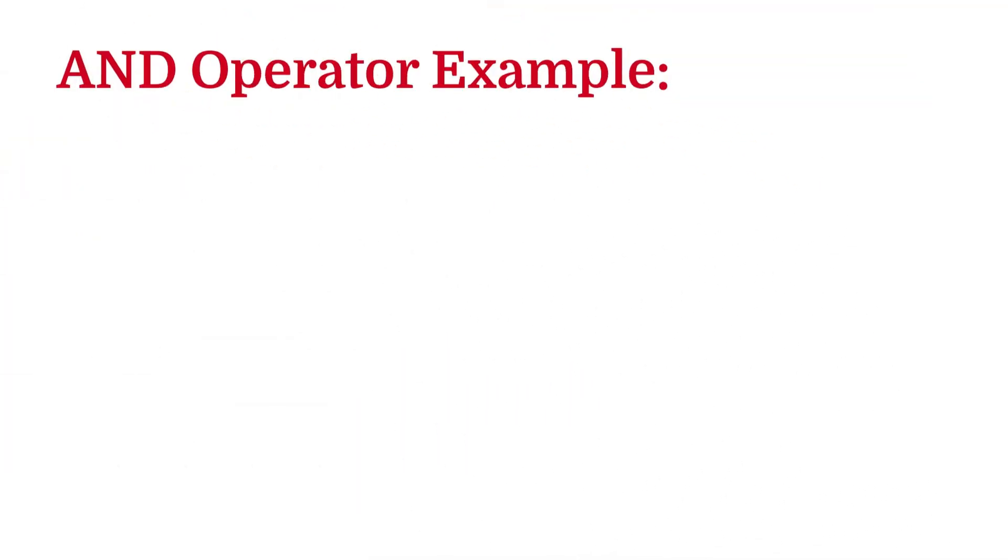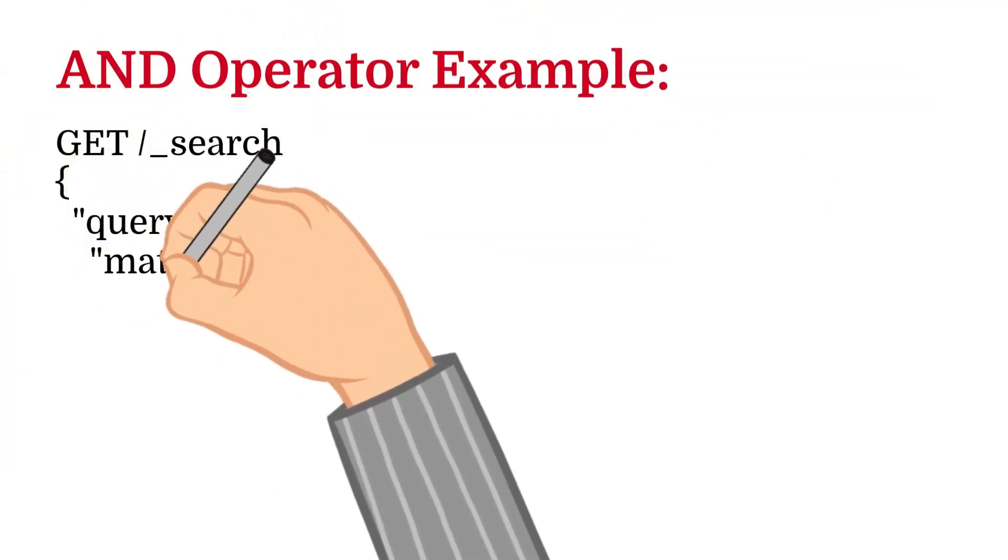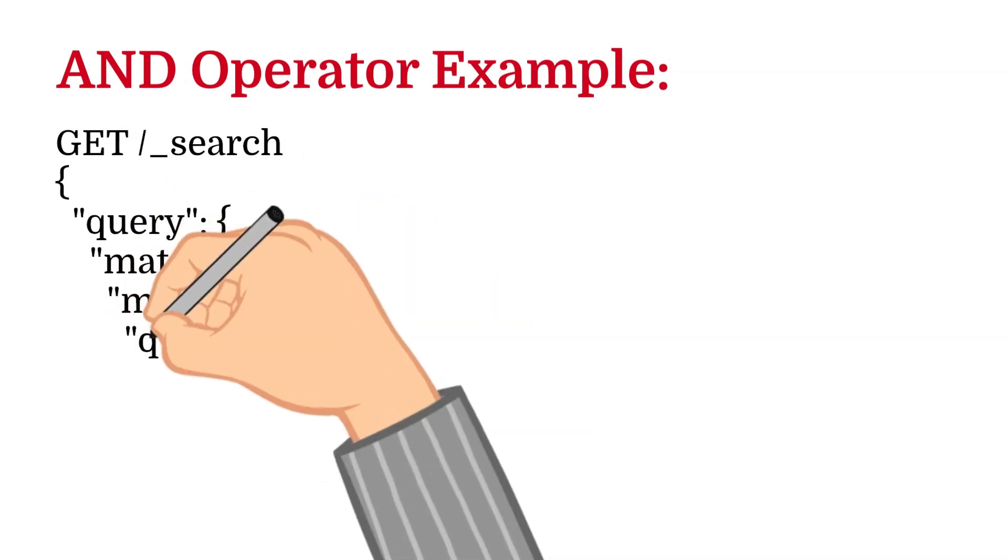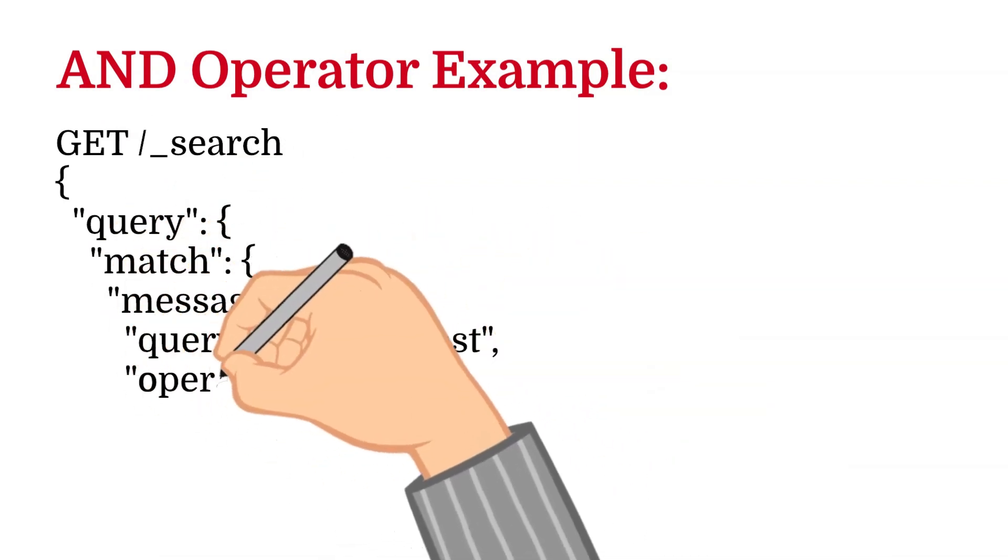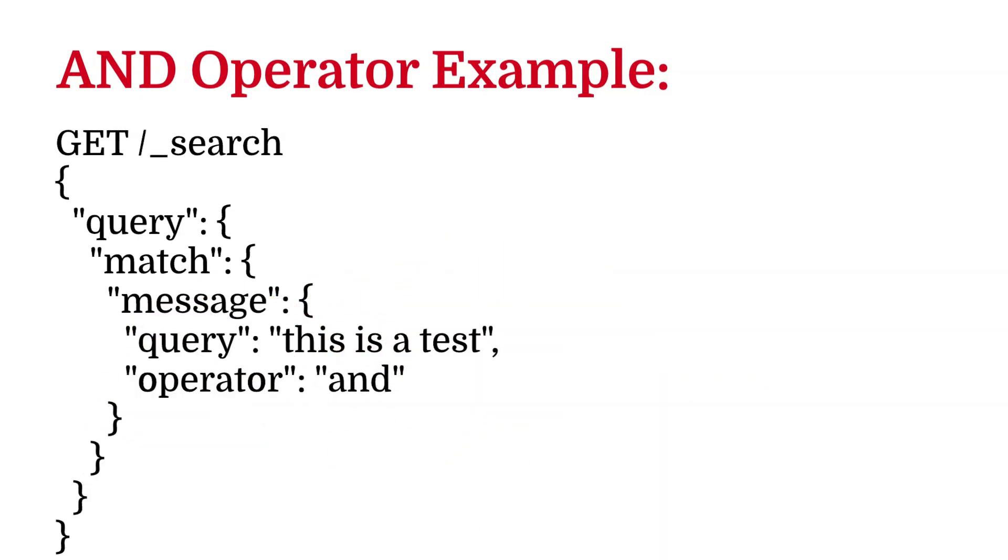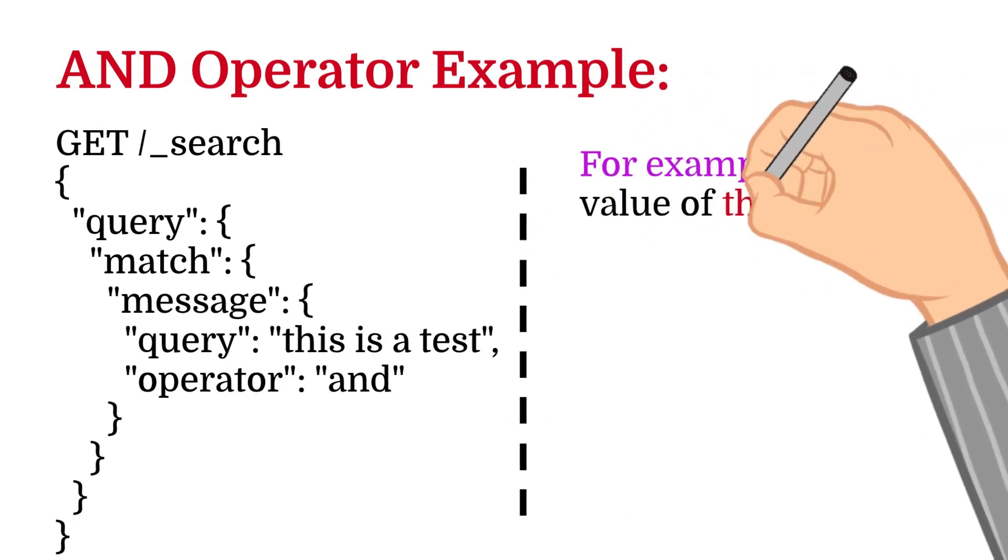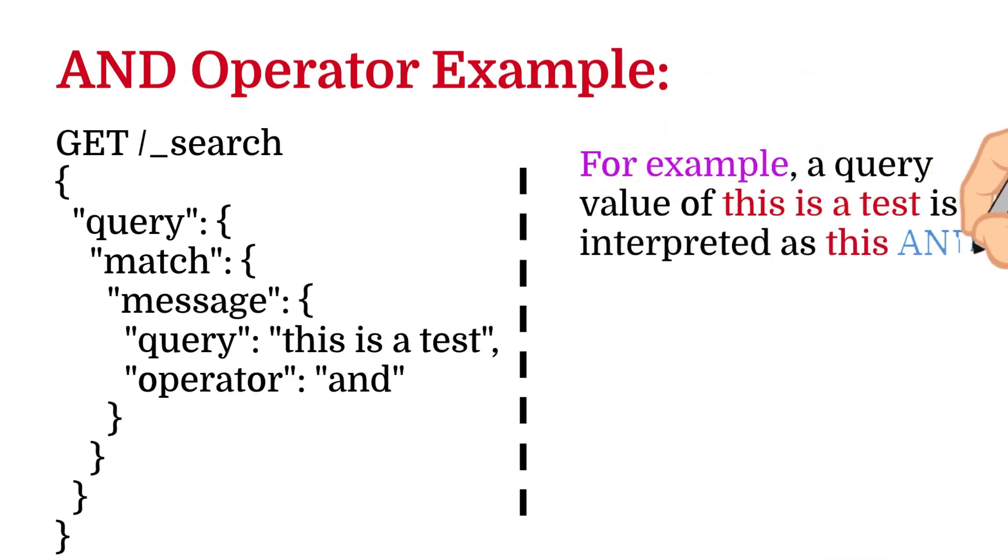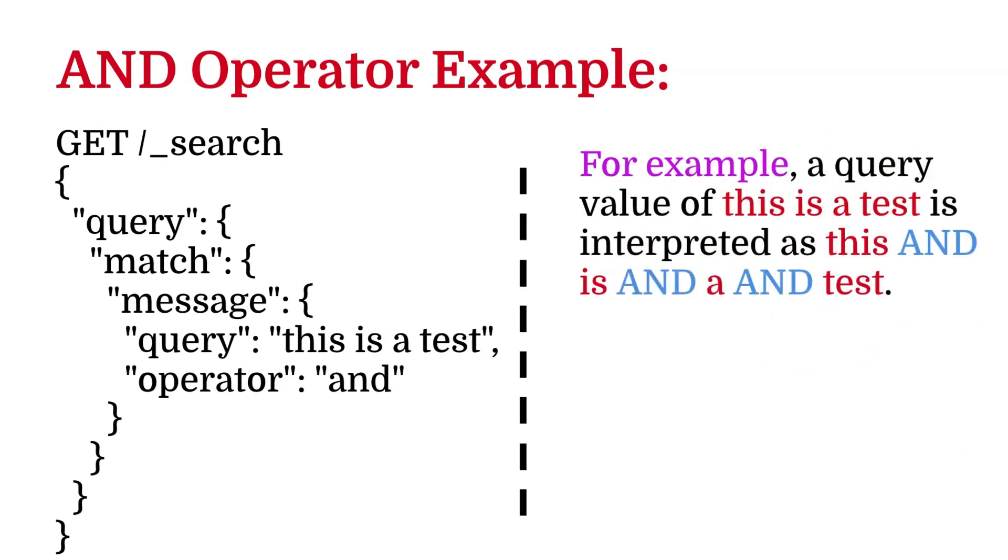Let's see an example of a Boolean type query with an AND operator. In this query you see that we are matching a query that is "this is a test" and the operator that we have defined is AND. For example, a query value of "this is a test" is interpreted as this AND is AND a AND test. So that means a document should contain all these words and only then the result will contain this document.